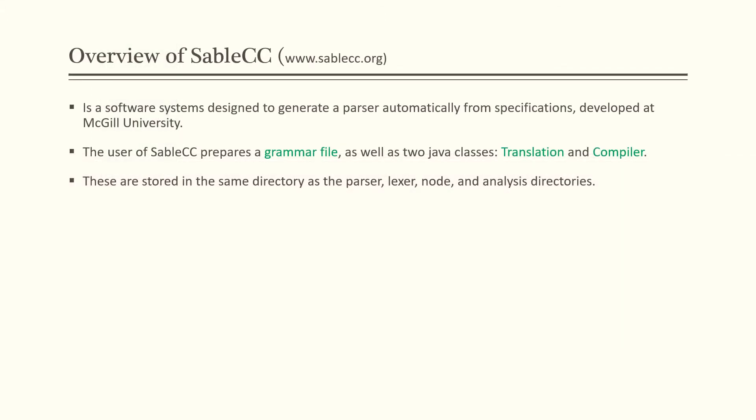This is an overview of SableCC. You can find further information on SableCC at the website www.sablecc.org, where you can find all documentation about the SableCC software, as well as all implementation details regarding SableCC. SableCC is actually a software system designed to generate a parser automatically, developed by McGill University.